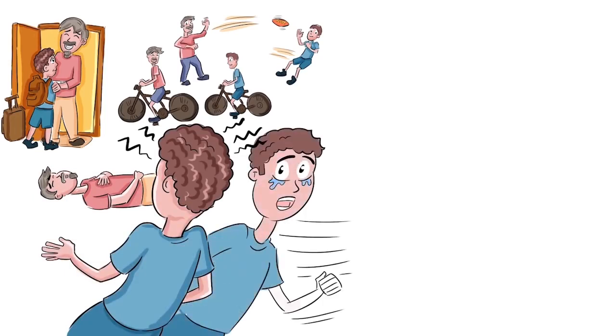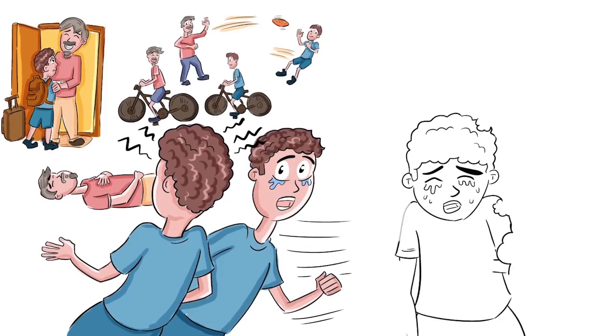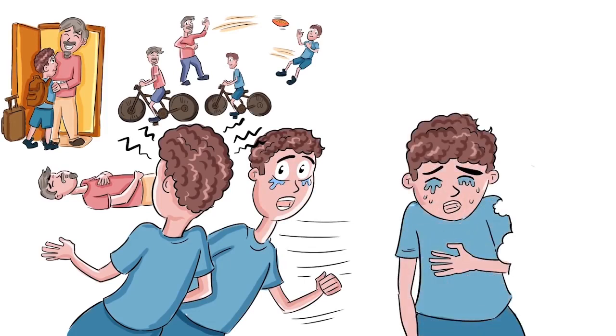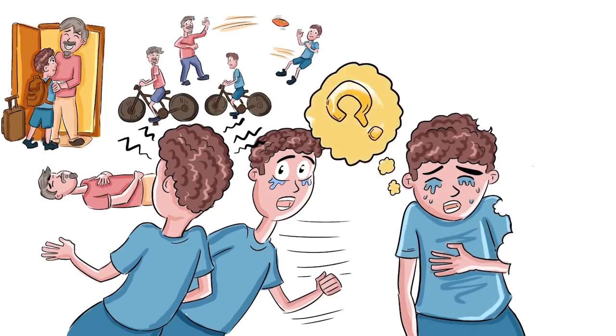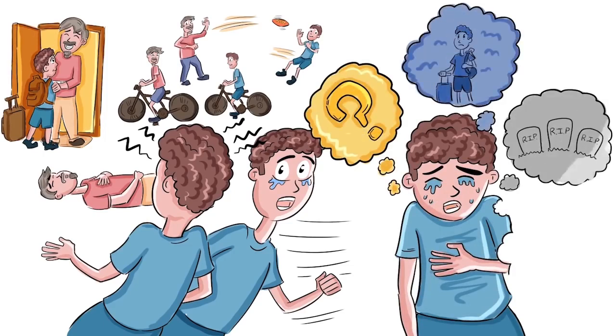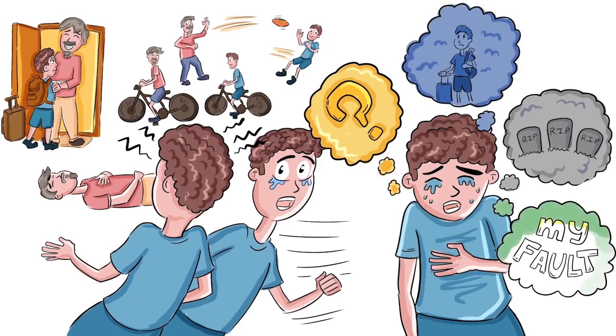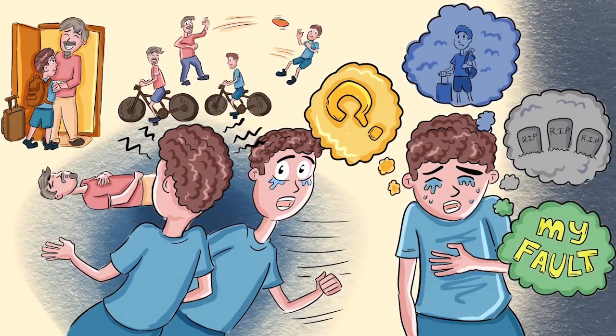I couldn't believe what I was seeing and just ran. I ran as far away as I could. In the middle of the street, I fell to the ground and started questioning. Why did this keep happening to me? What was going to happen to me? I tried to calm myself down, but all I kept thinking about was that everyone around me kept dying. This was all my fault. I later found out that my dad had diabetic complications.